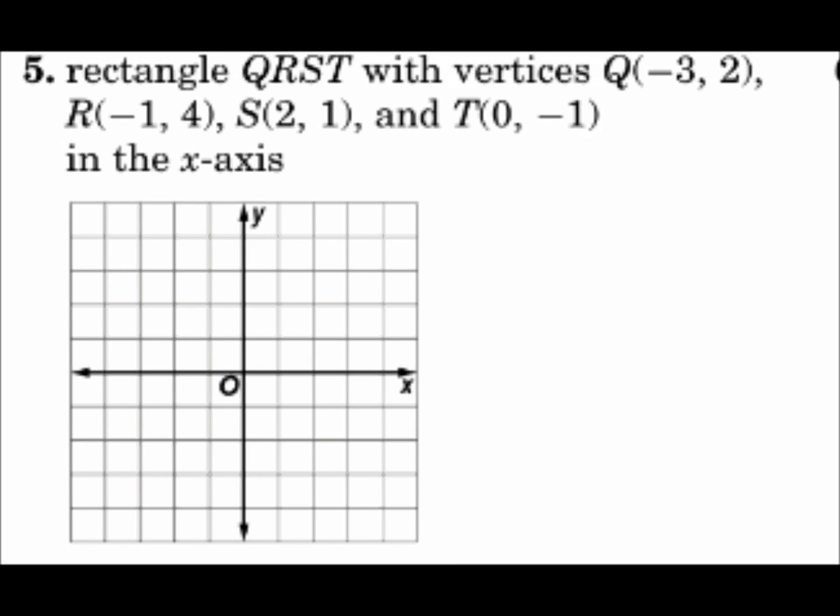Reflect quadrilateral or rectangle QRST in the x-axis. So let's plot the points first. Q is negative 3, 2.